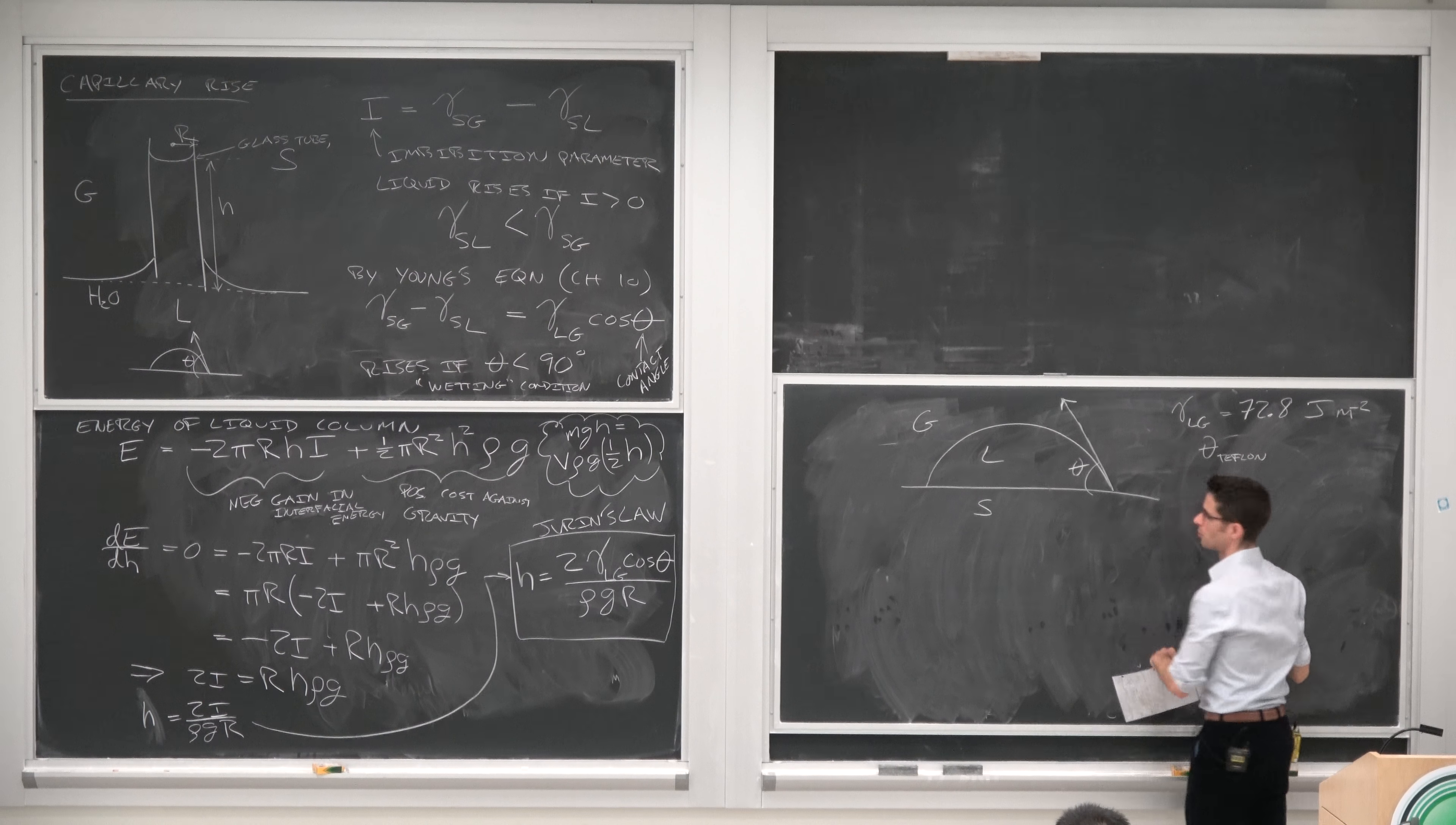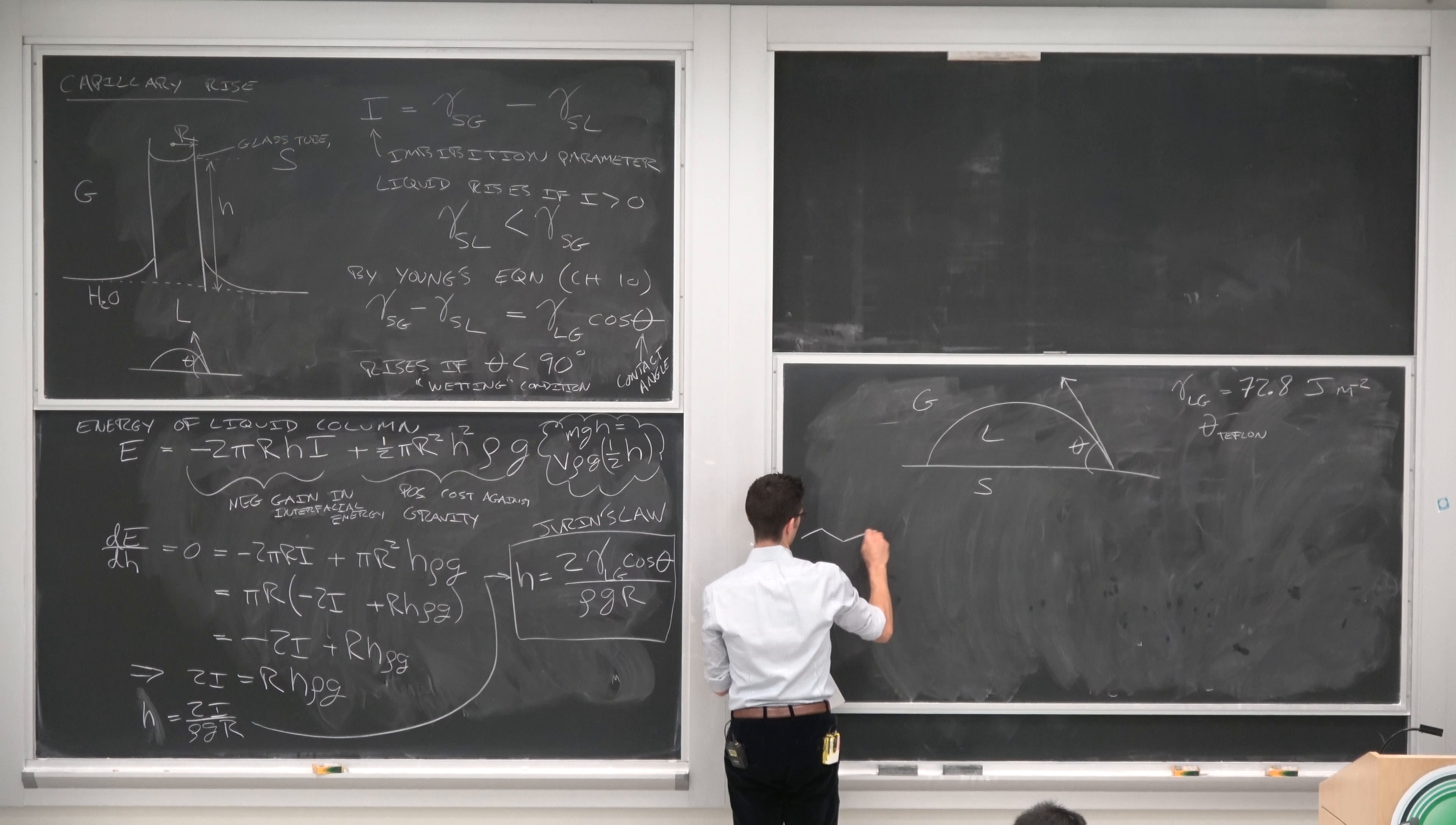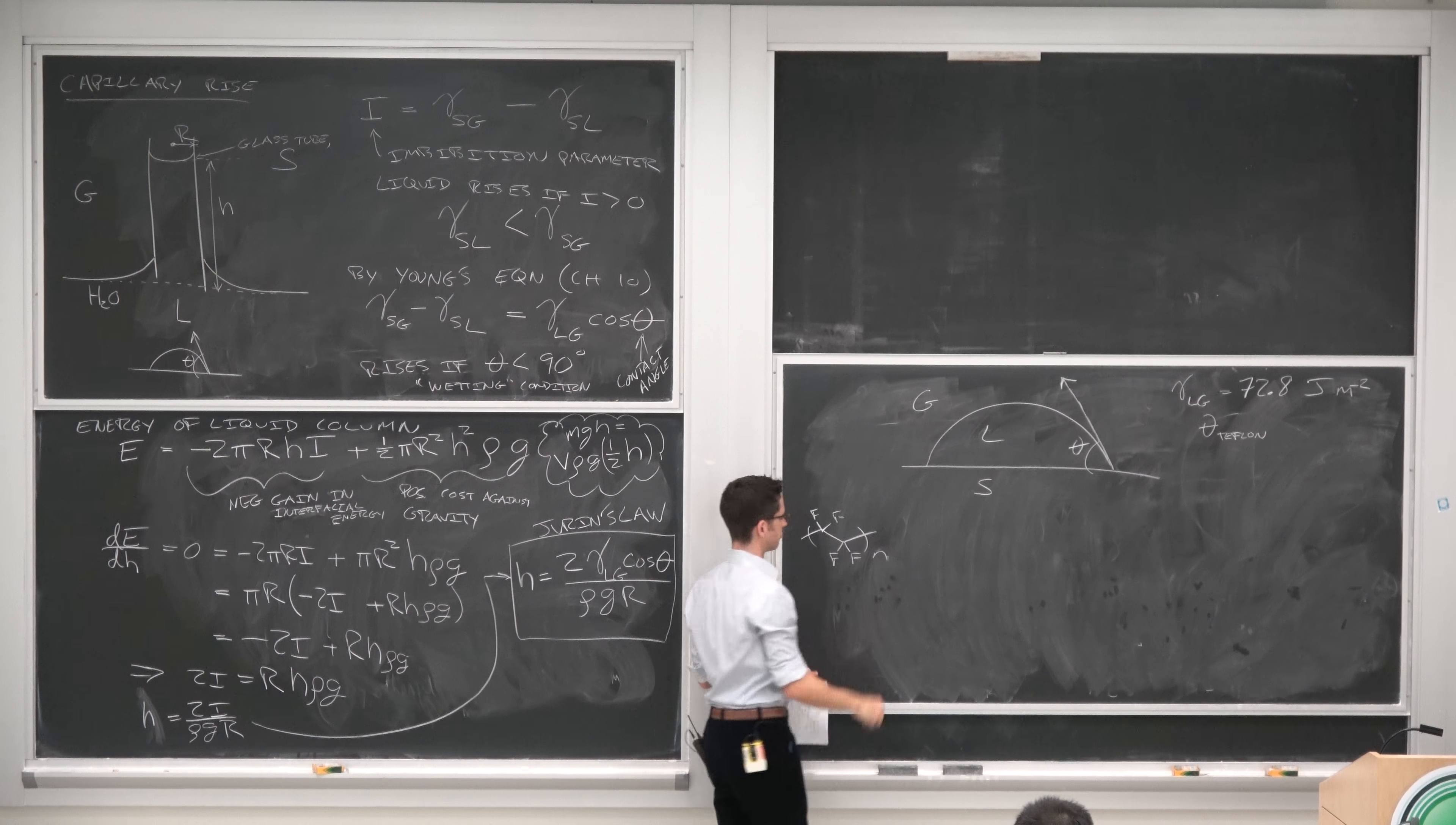So what do we know about Teflon? Teflon is a bunch of CF2 units. Teflon is really this.